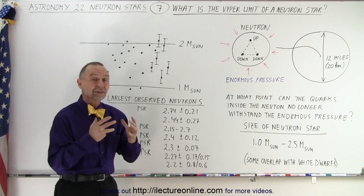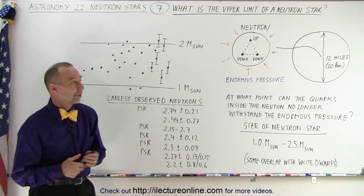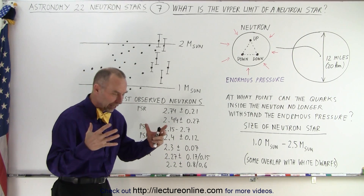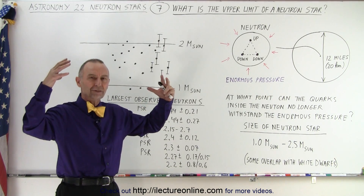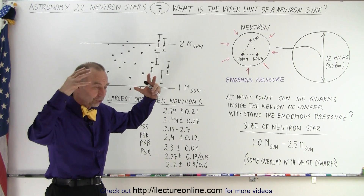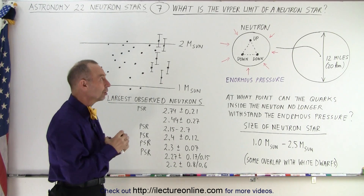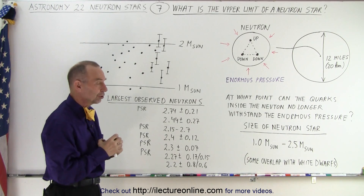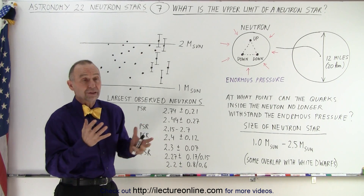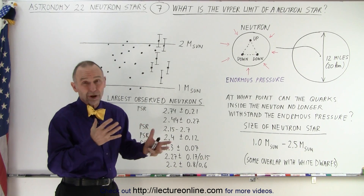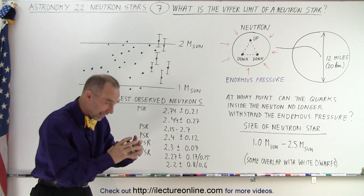Let's look at what makes the upper limit. Neutron stars are formed when massive cores of supermassive stars collapse into a very dense ball of nuclear material. That happens when the core has a mass of anywhere between 1 to about 2.5 times the mass of the sun.